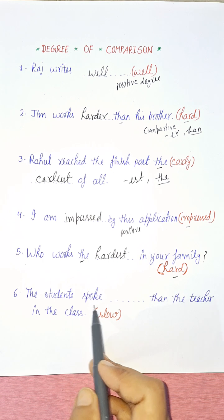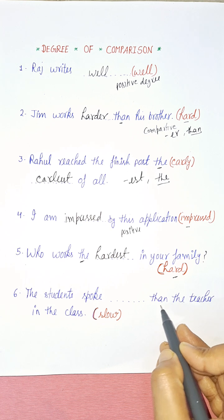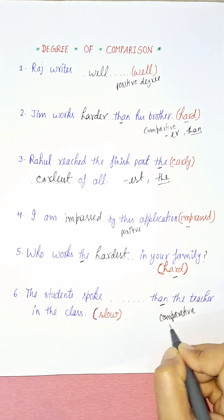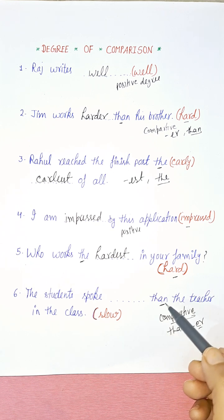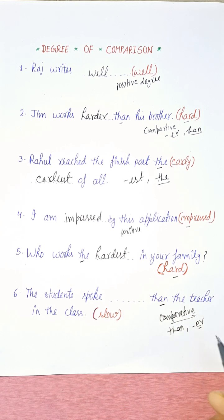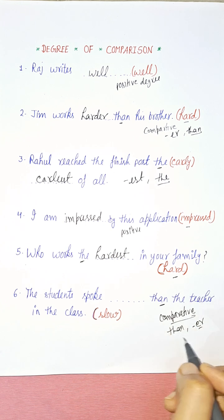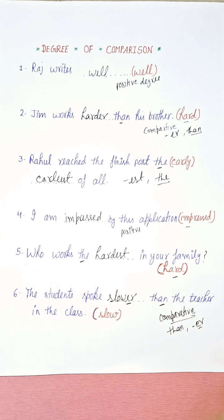Last sentence: 'The students spoke ___ than the teacher in the class.' The keyword 'than' tells you it is comparative degree. In comparative degree, you get the ER form. The adjective is 'slow,' so the answer is 'The students spoke slower than the teacher in the class.'